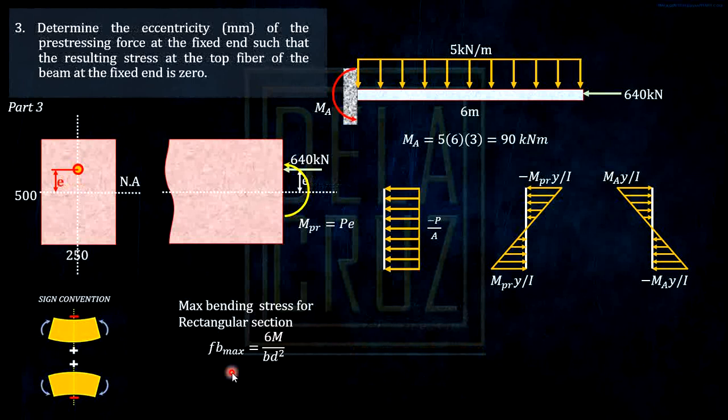For question number 3: determine the eccentricity of the prestressing force at the fixed end such that the resulting stress at the top fiber of the beam at the fixed end is zero. It simply says that the stress at the top fiber is zero. What is the required eccentricity E? E is the variable. The top fiber is just the summation of these stresses at the top, the same solution from Part 2.